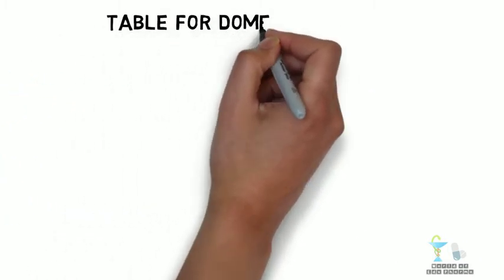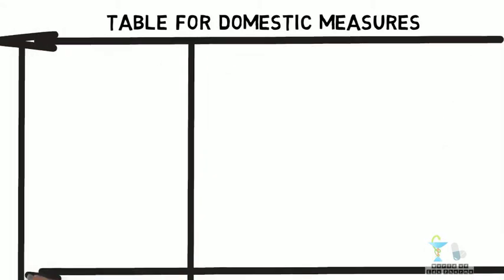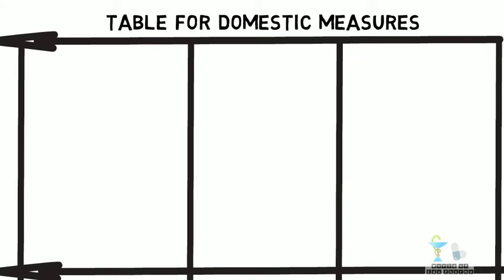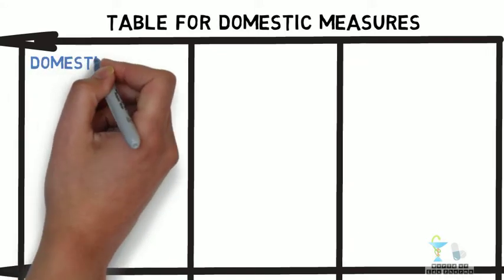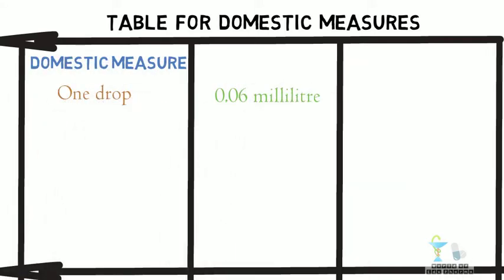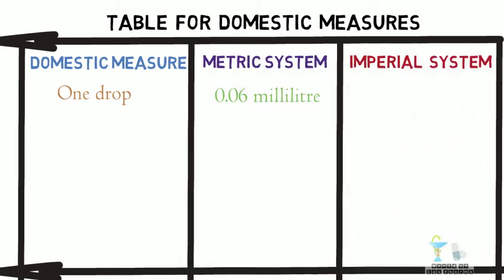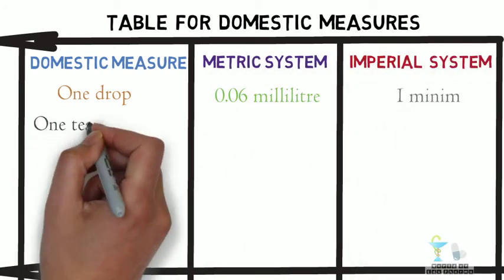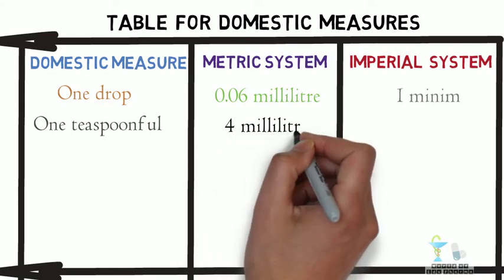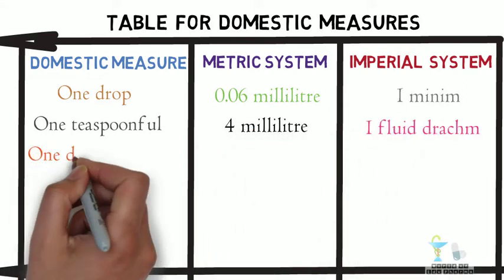Now let us see the conversion table for domestic measures — this will definitely be useful for you. In domestic measure, we say one drop, which is 0.06 milliliter in the metric system, and one minim in the imperial system. One teaspoonful is 4 milliliters, which equals one fluid dram.